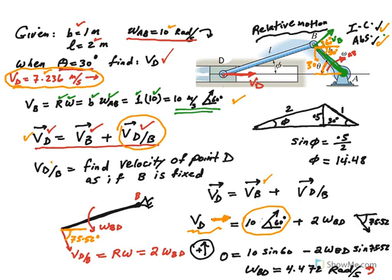What about velocity of D relative to B? That is the rotation part. Velocity of D relative to B means: find the velocity of point D as if B is fixed. So we draw the connecting rod BD at this instant with B fixed, as shown.